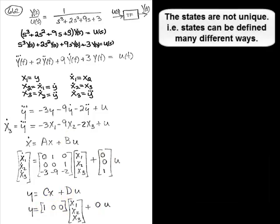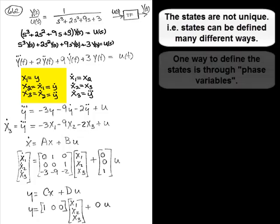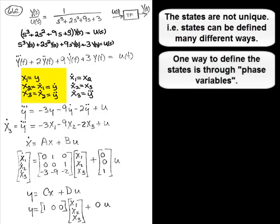The states are not unique. In other words, the states can be defined many different ways. One way to define states is through phase variables.